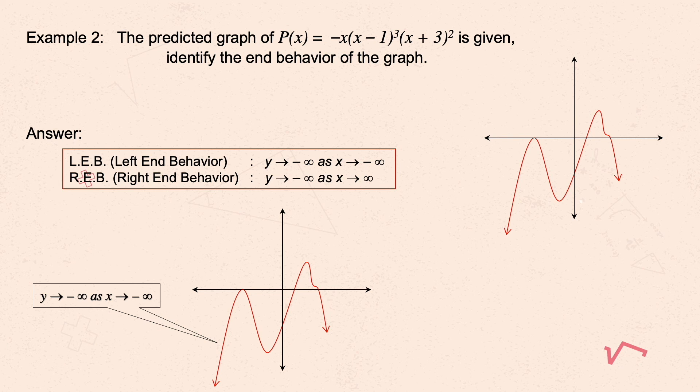In the third quadrant, y is negative and x is also negative. Therefore, the left end behavior is: y goes to negative infinity as x goes to negative infinity. For the right end behavior, x is positive and y is negative. So the right end behavior is: y goes to negative infinity as x goes to positive infinity.